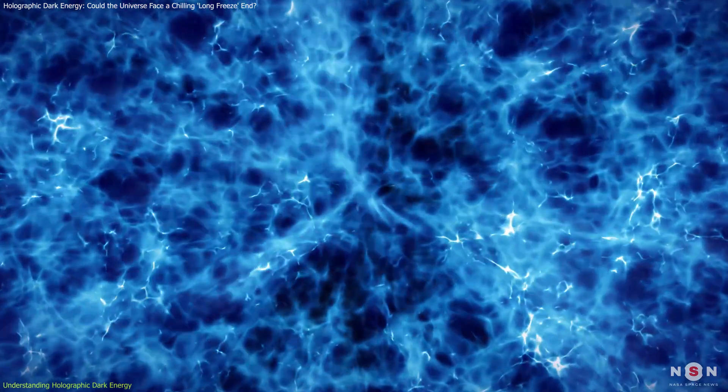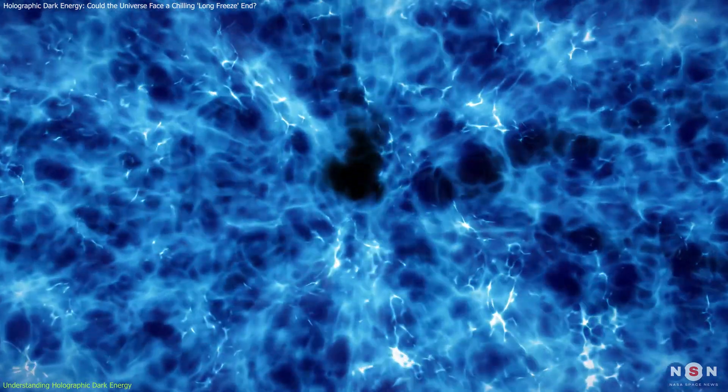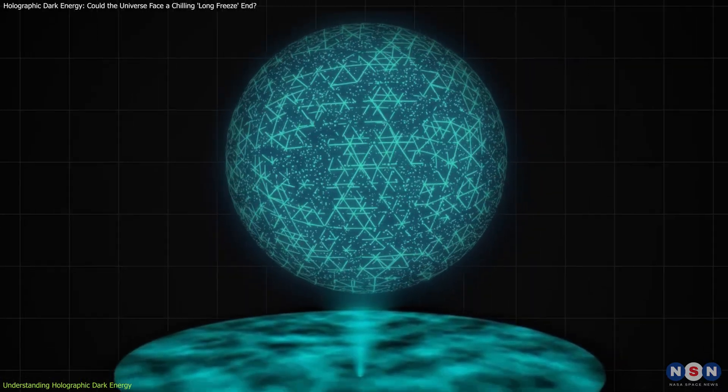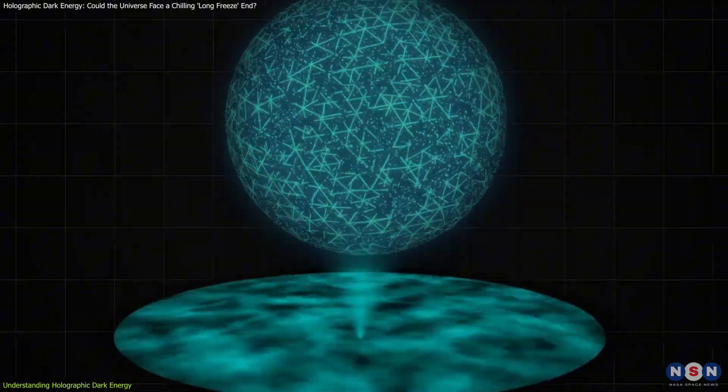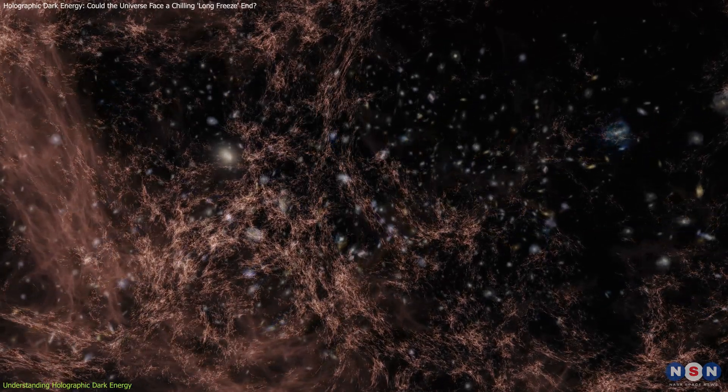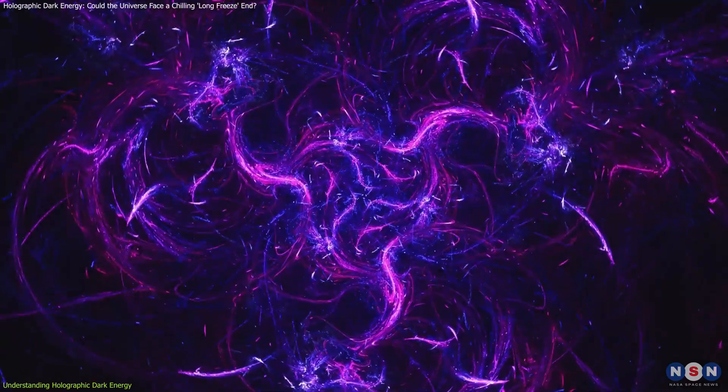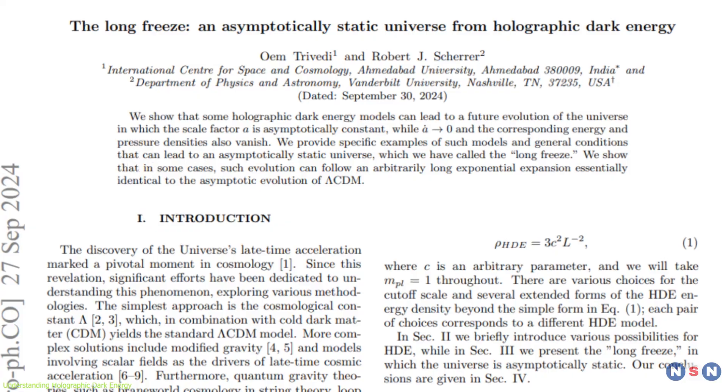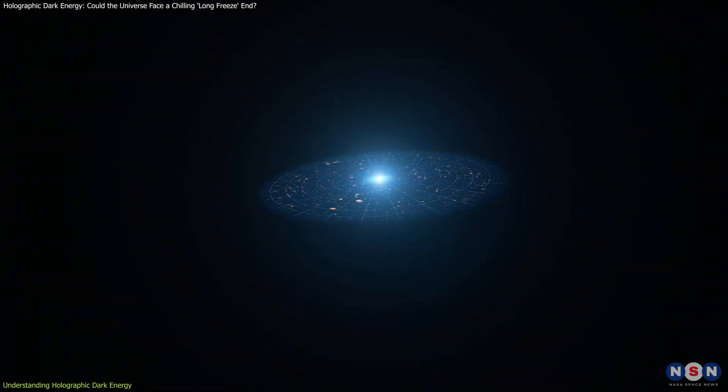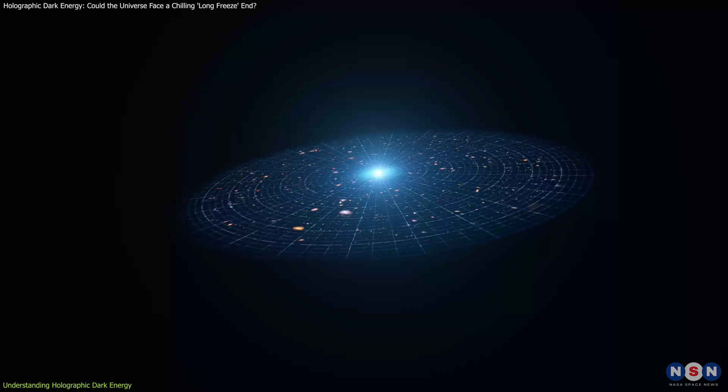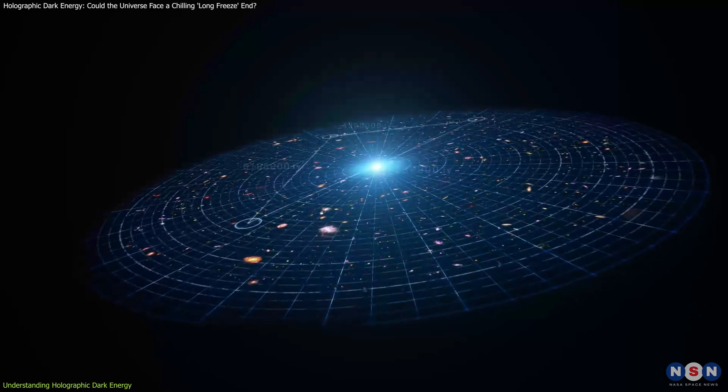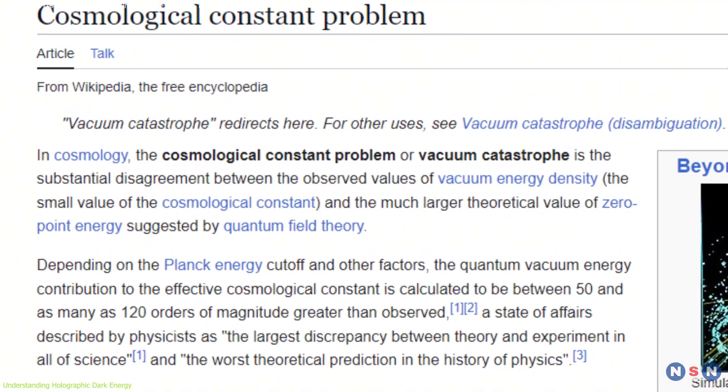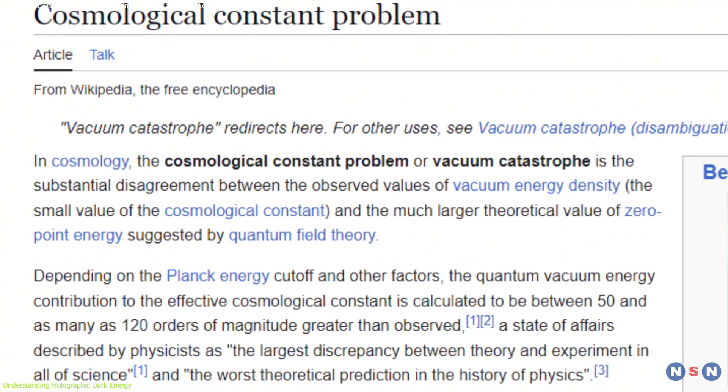In the context of dark energy, this means that the effects we observe, like the universe's acceleration, might arise from these deeper two-dimensional processes. Researchers suggest that dark energy is not a physical entity filling space, but rather an emergent property from these quantum interactions. This theory offers a fresh perspective, potentially solving some long-standing issues with our understanding of the universe's expansion, such as the cosmological constant problem, which is a mismatch between theoretical predictions and observed values.